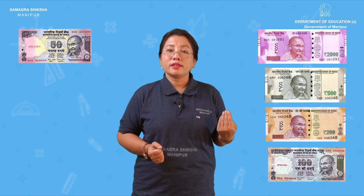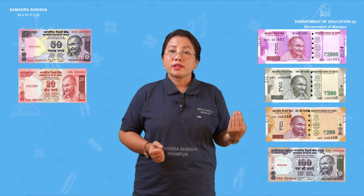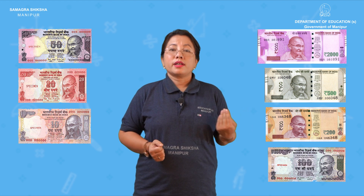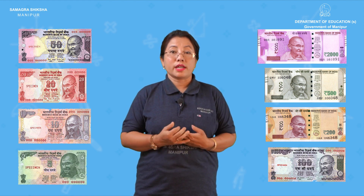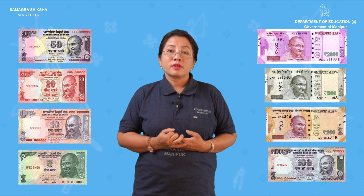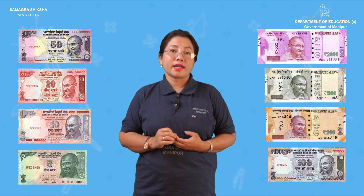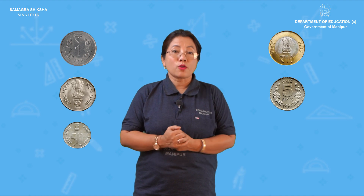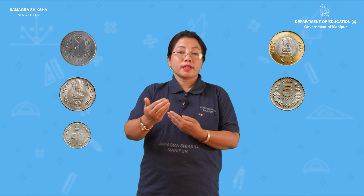Write down the currency notes and coins: rupees 2000, next 500, next 200, next 100, then 50, then 20, then 10. Now there are 50 coins in modern money — you will have to mark the category of coins.